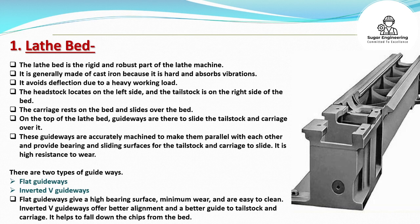The lathe bed is high resistance to wear. There are two types of guideways: flat guideways and inverted V-guideways. Flat guideways give a high bearing surface, minimum wear, and are easy to clean. Inverted V-guideways offer better alignment and a better guide to tailstock and carriage. It also helps to fall down the chips from the bed.